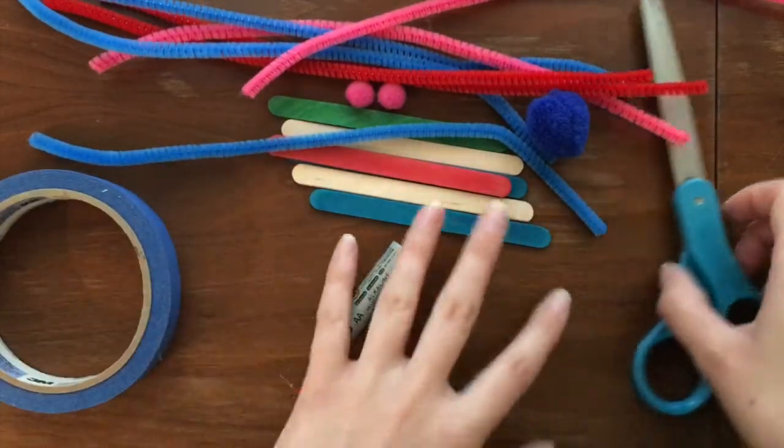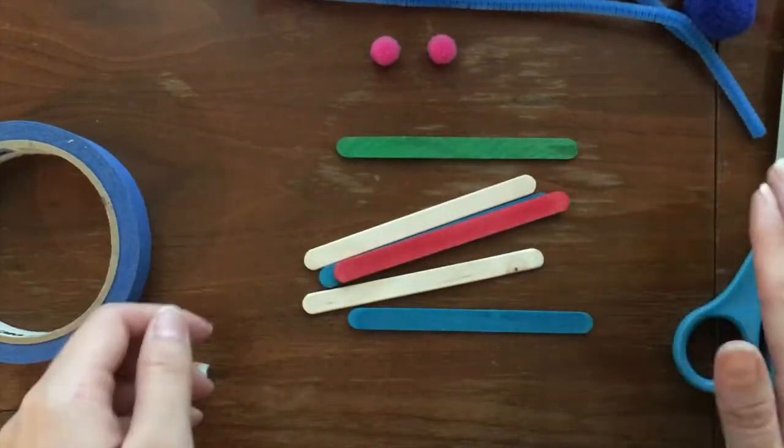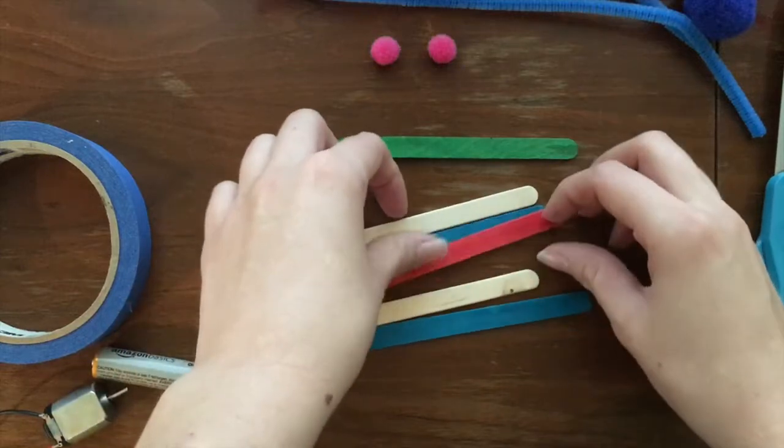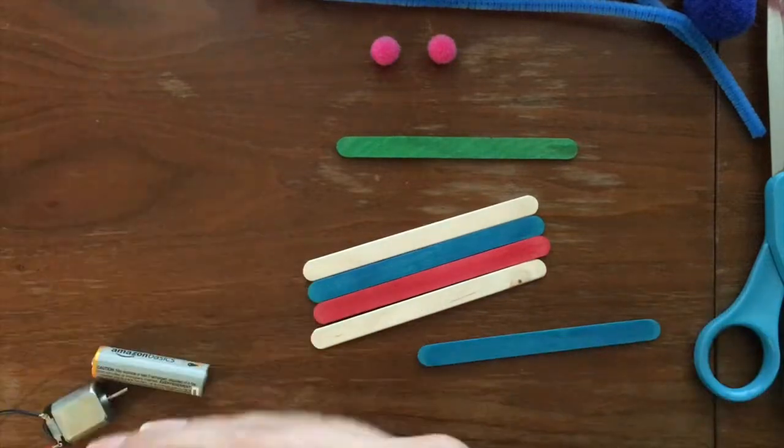We'll first start with making the body of the WiggleBot. So today I have some popsicle sticks for the body. Also good things to use are like cardboard or construction paper, whatever you guys want.